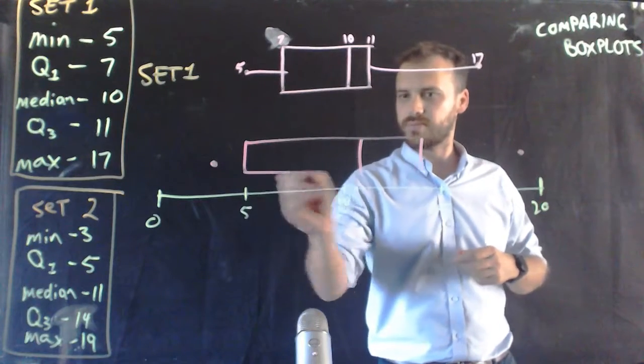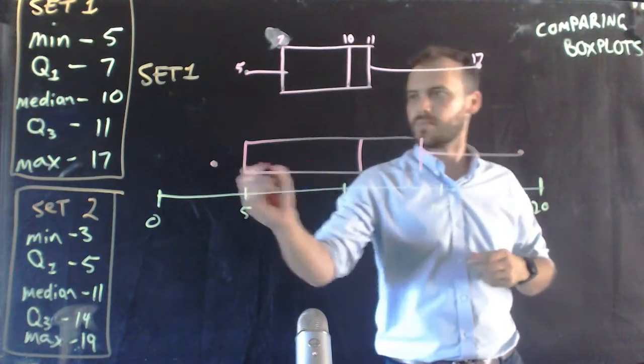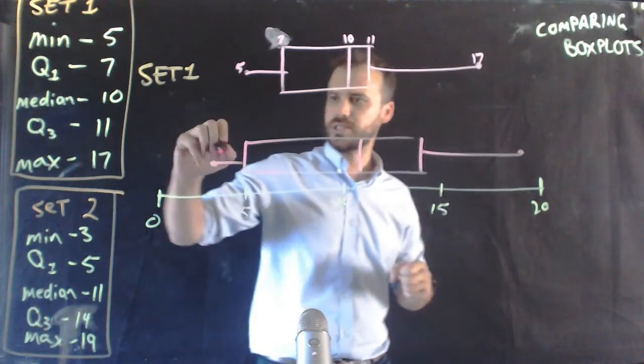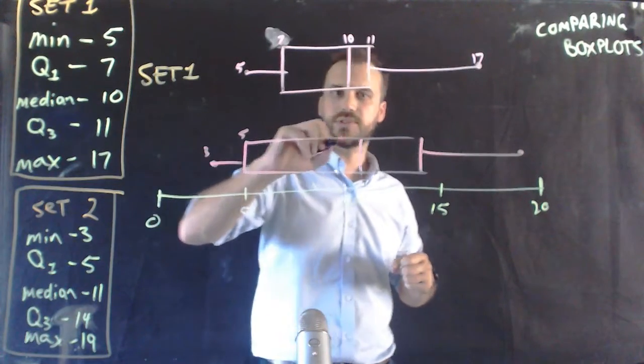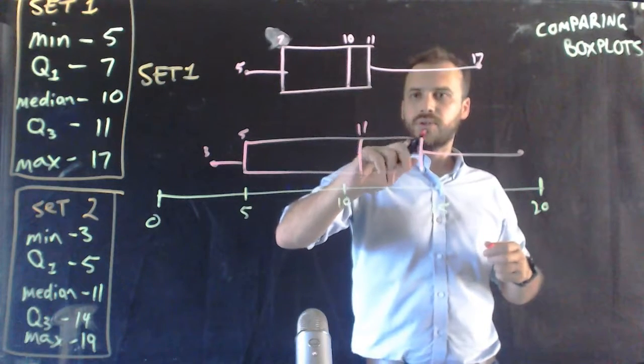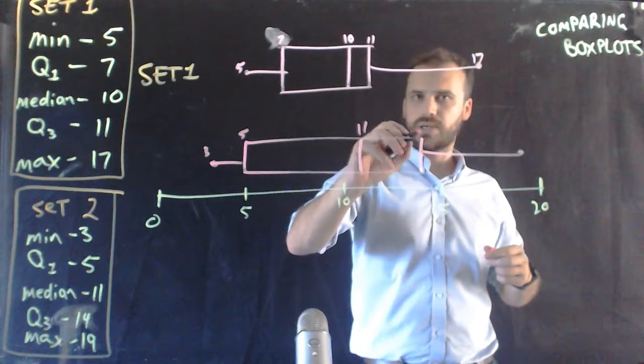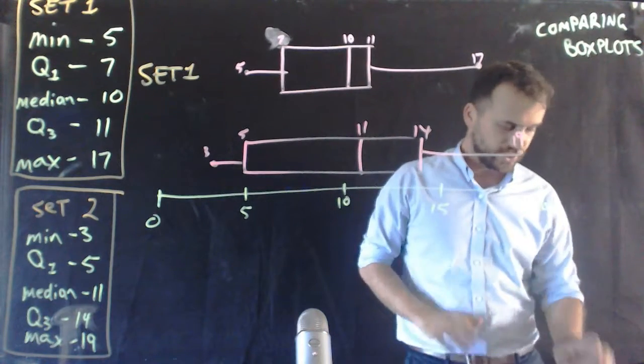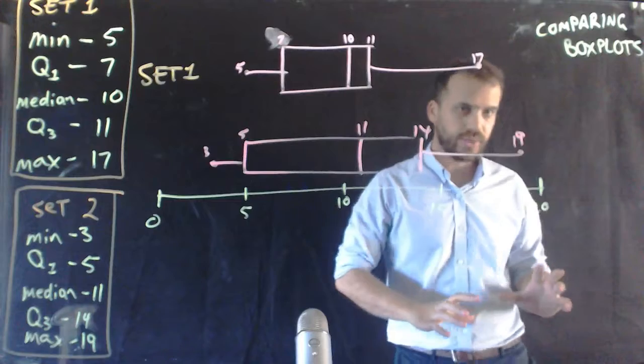Let's try a box and whisker plot. Okay, and then I might just label these so we can see clearly what's going on. What's that? 14 and 19. Okay, so I'm just going to try to get out of the way a little bit.